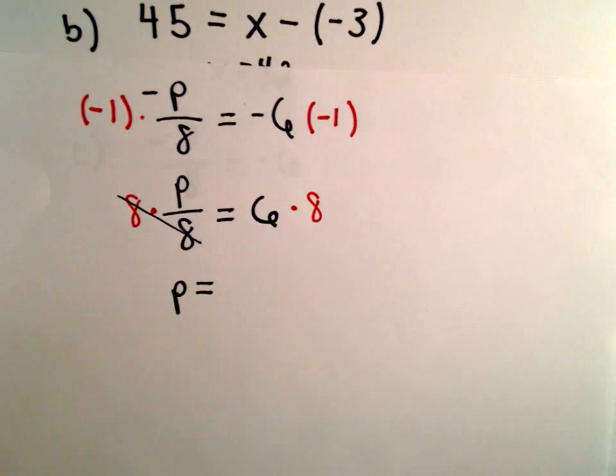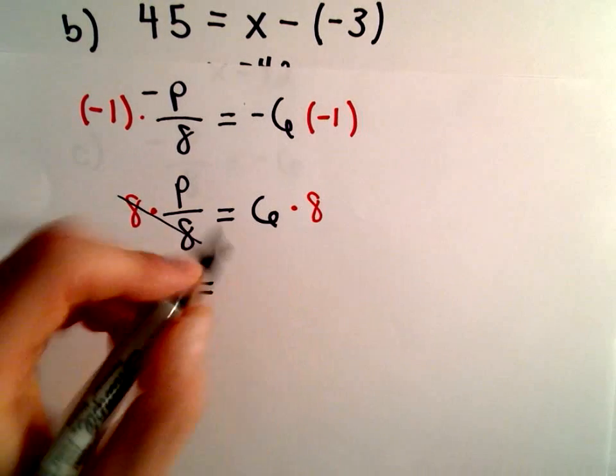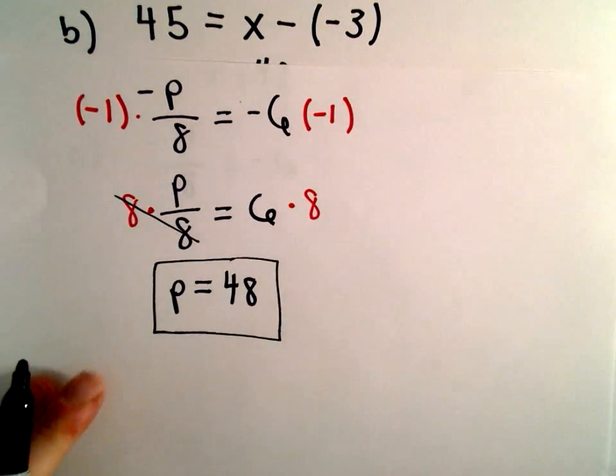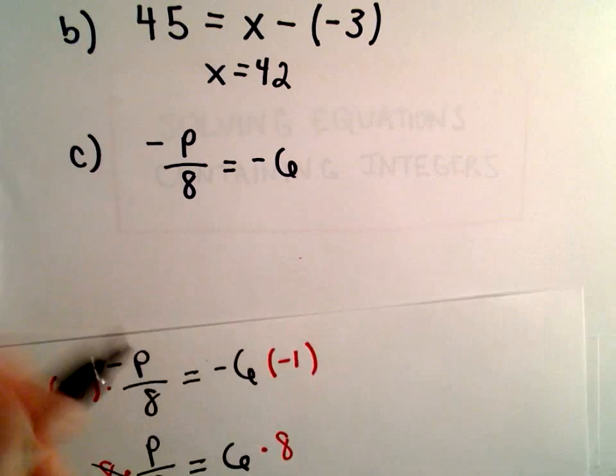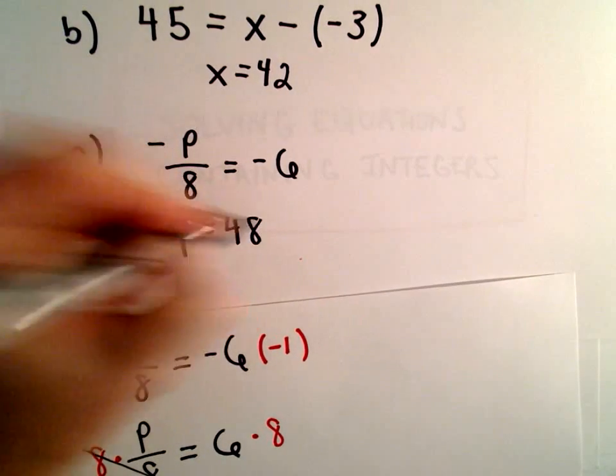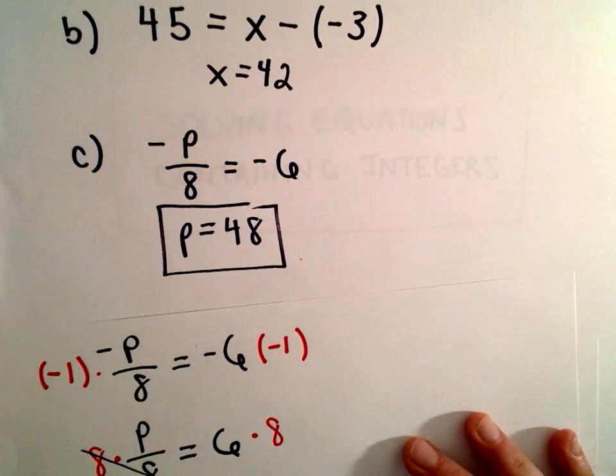We'll be left with 1P on the left side. 6 times 8 is 48. And that gives us our solution to the third equation. Our solution is P equals 48.